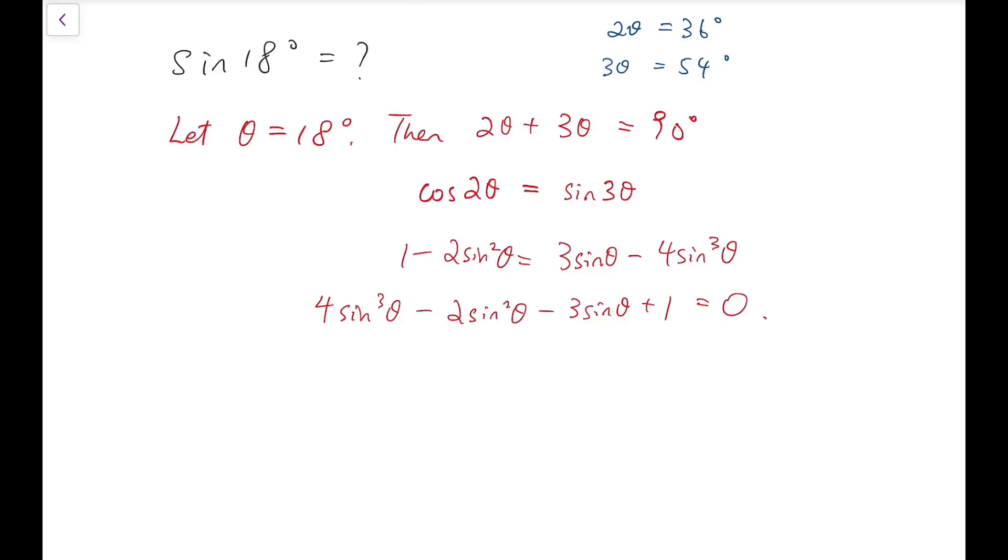So at this point, to make sure that everyone can see that very clearly, I'm going to let x equal sine θ. Then I have a polynomial here: 4x cubed minus 2x squared minus 3x plus 1 equals 0.